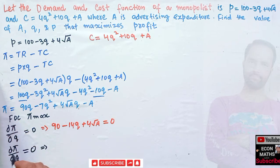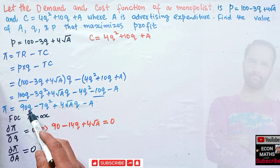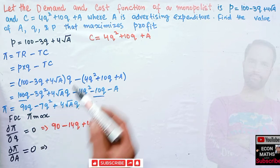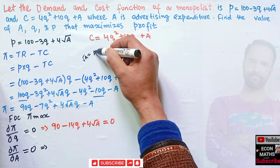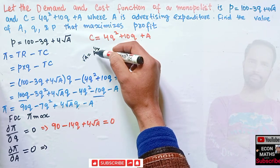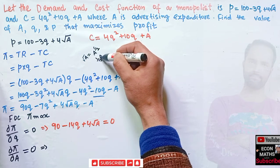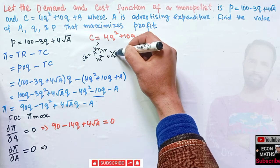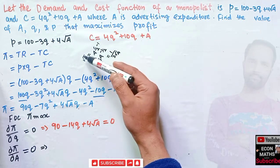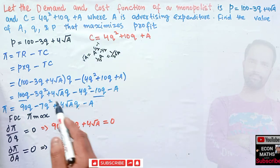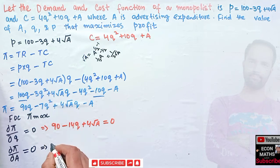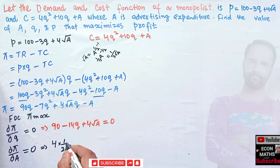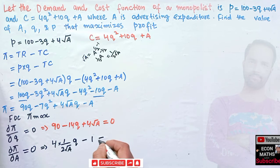Now taking the partial derivative with respect to advertising expenditure A: the 90Q term has no A so its derivative is zero; the −7Q² term has no A so its derivative is also zero. For the term 4√A·Q, we write √A as A^(1/2). The derivative of A^(1/2) is (1/2)A^(−1/2) = 1/(2√A). So the derivative of 4√A·Q with respect to A is 4·Q/(2√A) = 2Q/√A. The derivative of −A is −1. Setting this equal to zero: 2Q/√A − 1 = 0.